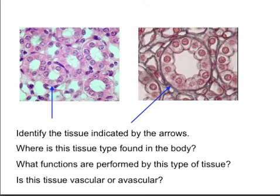Absorption is sort of the reverse. We transport something from outside the cell to inside the cell. This can happen via endocytosis, where we enclose an extracellular product in a vesicle that's transported inside the cell and either used, broken down, or transported to the opposite end and secreted. Active absorption involves a pump working from outside to inside the cell, bringing something in regardless of its concentration.